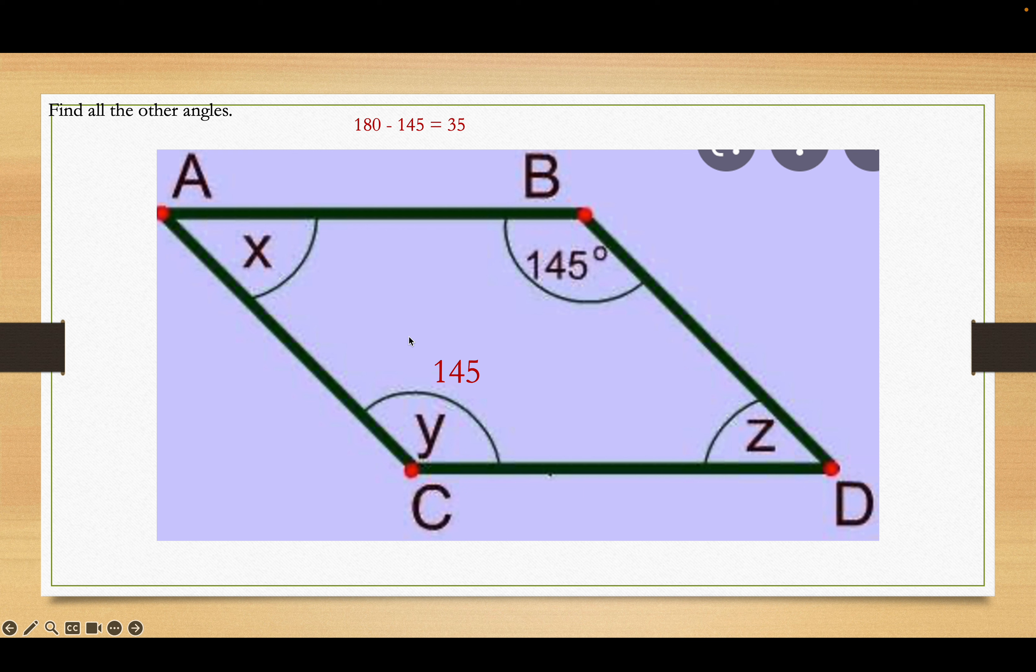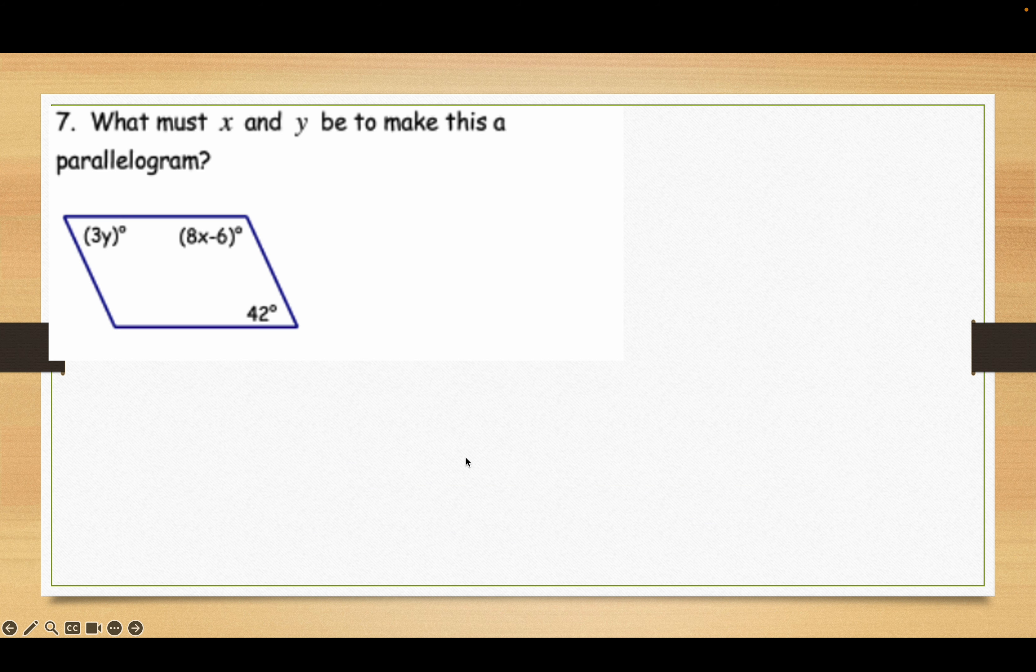Okay. And, there are your two parallel lines cut by a transversal, showing that the consecutive interior angles, the 35 here and the 145 angles, X and Y, add up to 180 degrees. Okay, what must X and Y be for this to be a parallelogram? Good.